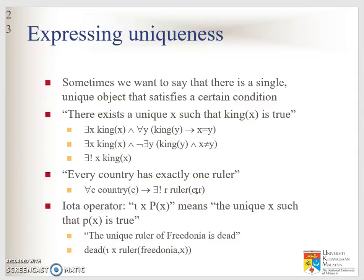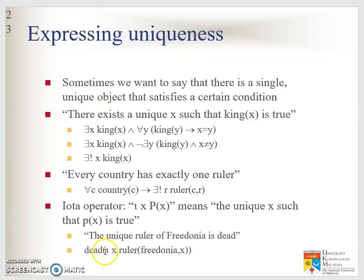We also have the iota operator. Iota x P(x) means the unique x such that P(x) is true. For example, the unique ruler of Fredonia is dead — represented as: the unique ruler of Fredonia, where x is that person, is dead.